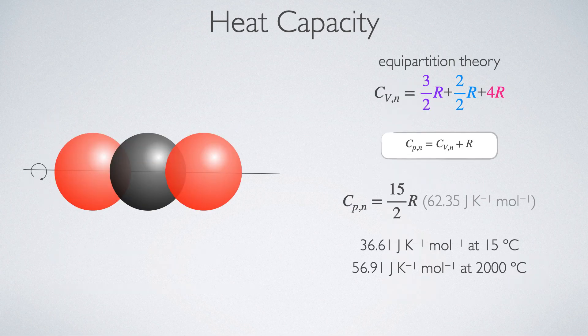So if I take this further, Equipartition theory for carbon dioxide would say that my heat capacity should have the contributions from the translations, the rotations, and the vibrations, which should give me a heat capacity somewhere around 13 halves R at constant volume. And just recall that the heat capacity at constant pressure is the heat capacity at constant volume plus R. And so this is saying my heat capacity at constant pressure should be around 15 halves R. So 62 joules per Kelvin per mole. Now at 15 degrees C, we see a heat capacity of just 36 joules per Kelvin per mole. But that increases to be much more in line with what Equipartition theory would be predicting if we increase this temperature all the way up to 2000 degrees C.